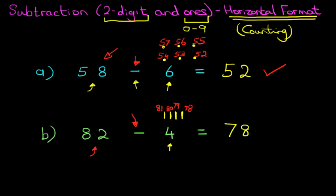And you can do that without pen and paper. 82 minus 4 equals 78. So, that is how we do subtraction of a two-digit number and ones using the horizontal format. You can either use the dot method or use your fingers.